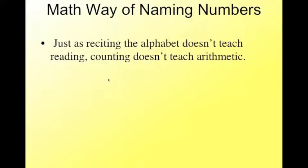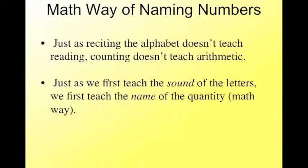The math way of naming numbers. Think about it compared to reading. Just because a child can recite the alphabet doesn't mean that they can read. Same thing with counting. The counting doesn't teach arithmetic. So what do we do with reading? We first teach the sounds of the letters, ap, a, k, d. The same way, or in the same way, we teach the names of the quantity, 2, 10, 1, 2, 10, 2, 2, 10, 3, 2, 10, 4.